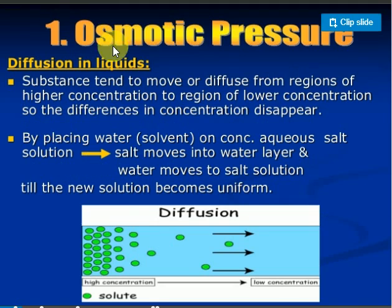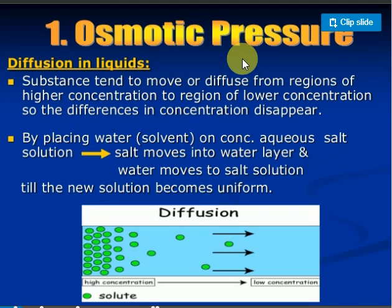Now we will discuss the first colligative property: osmotic pressure. First, what is the osmosis process? When you prepare a raw mango pickle and place the mango piece in salt solution, after two days the mango piece shrinks. Why? Because salt has a higher concentration, so water molecules move out of the mango piece into the salt solution. That is osmosis.